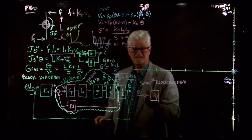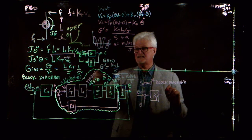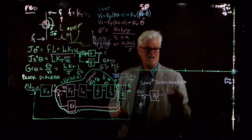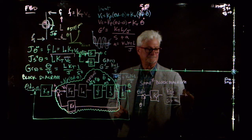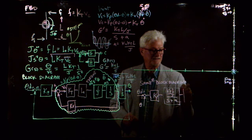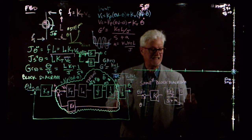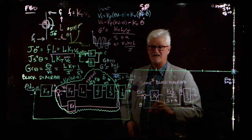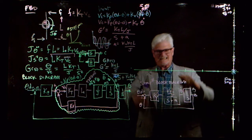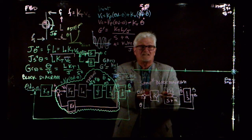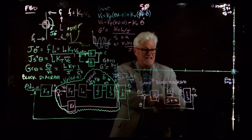Instead of the original inner block, I put in the equivalent transfer function, which is just K_T*L over J divided by (S + A). Then I still need the last 1 over S on here too, because I'm still interested in theta — that's what I'm using for my control law. This is the simpler equivalent block diagram.